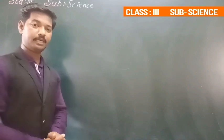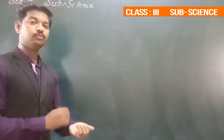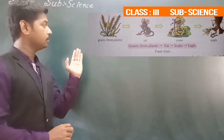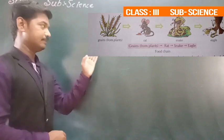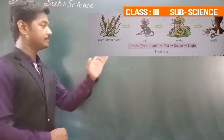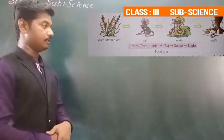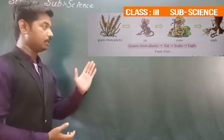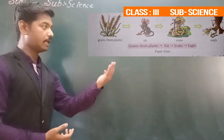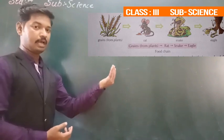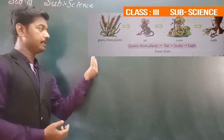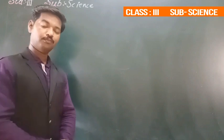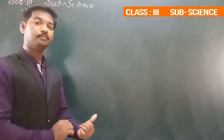Now see in your textbook page number 8. When food chain is shown, you will see that rat eats grains, then snake eats rat, and then eagle eats snake. In this picture you will see how animals are depending on one another and how animals are depending on plants.